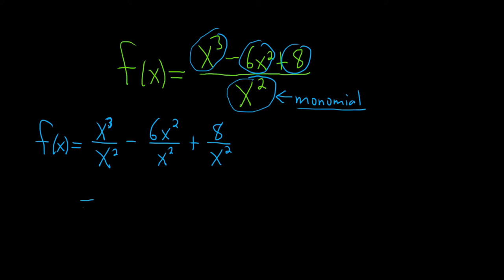This is equal to: x cubed over x squared gives us x. These cancel, so you just have minus 6. Then you can take this and move it upstairs, so plus 8x to the negative 2. And this is still f of x.